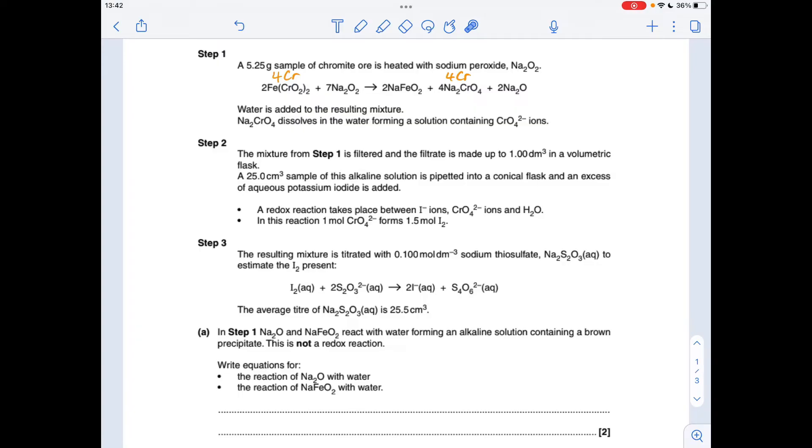So the alkaline solution—just look at the atoms involved: you've got sodium in there, you've got oxygen, you've got hydrogen from the water, so the alkaline solution has got to be sodium hydroxide. The brown precipitate, if you think about your transition metal hydroxides, you've got iron in there. Iron three hydroxide is like a reddish orangey brown color, so that must be the brown precipitate.